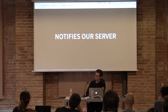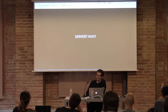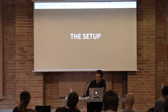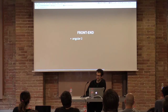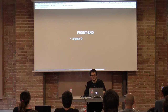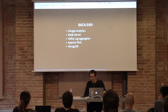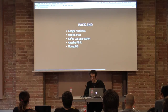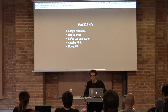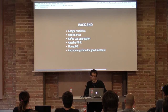This notifies our server. The full stack setup for this demo has Angular 2 on the frontend — because we're at Angular Beers — and a little bit of custom JavaScript. On the backend, we're using a lot of technologies: we're tying Google Analytics with our own custom backend analytics server, using a little bit of Spark and MongoDB to store our results, and some sweet Python.